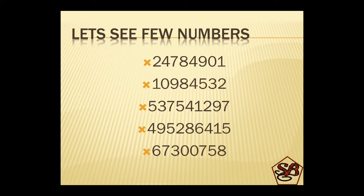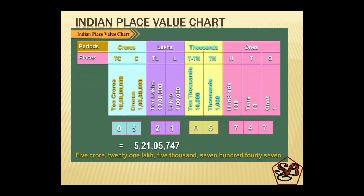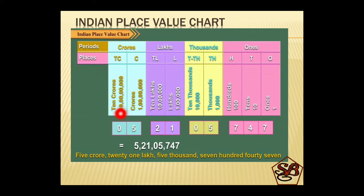So to make the reading of large numbers easy, we put them in the place value chart. In the Indian place value chart, we always start from the right hand side with the ones place. Ones, tens, hundreds — this forms one group. Thousands, ten thousands — this forms another group. Lakhs, ten lakhs — another group. And crores and ten crores. We put the digits in this place value chart and then we try to read them.